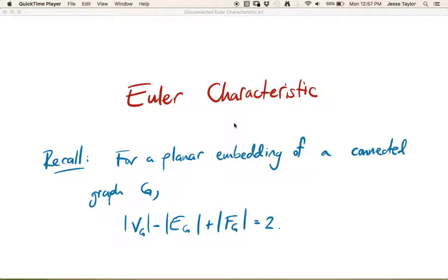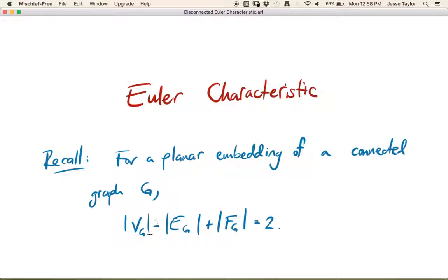In this video we're going to be talking a little more about Euler characteristic. A few videos ago we talked about Euler characteristic, and for a planar embedding of a connected graph, you get the Euler characteristic by calculating vertices minus edges plus faces. You have to have an embedding to be able to talk about faces — an embedding means that you don't have any edge crossings.